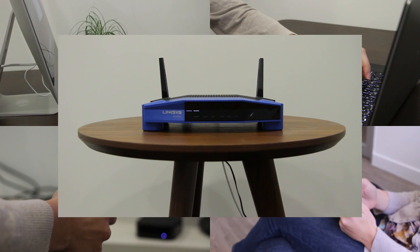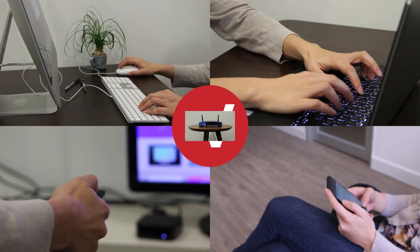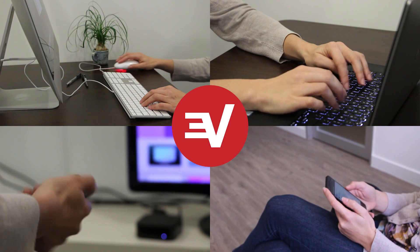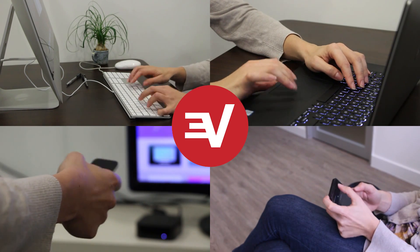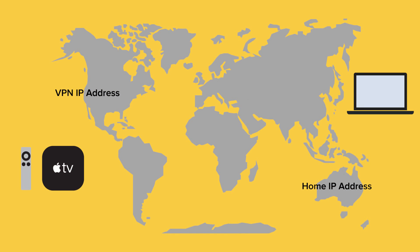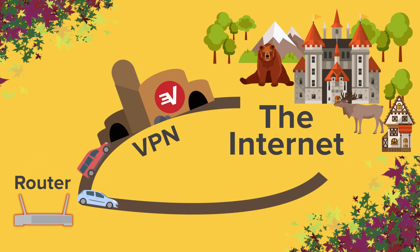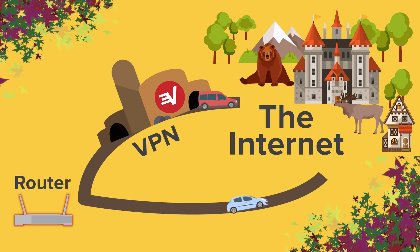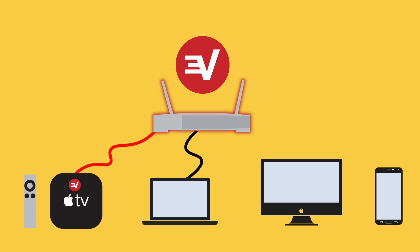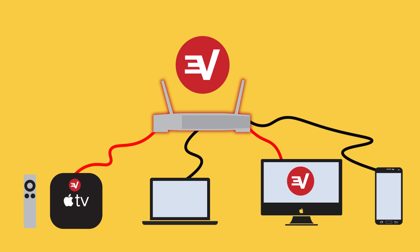The ExpressVPN app for routers can provide VPN protection to all the devices on your home network. However, there may be times when you want to only have some devices connected to the VPN. For instance, you might want two devices in your home to have IP addresses from different locations. In that case, split tunneling is the perfect solution. It lets you choose which devices connect to ExpressVPN and which ones access the Internet without VPN encryption. The ExpressVPN app for routers makes it easy to set up your split tunneling preferences.